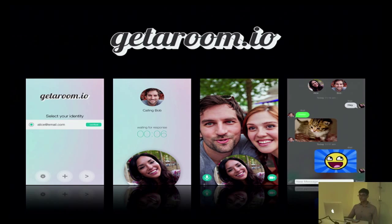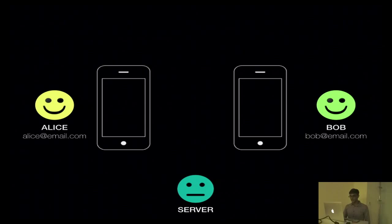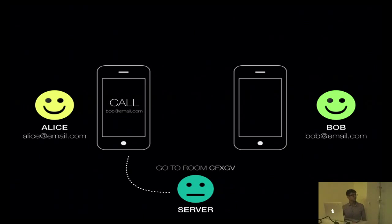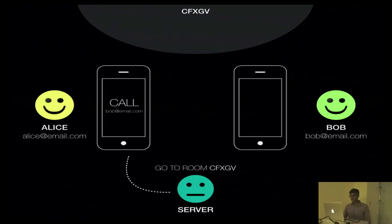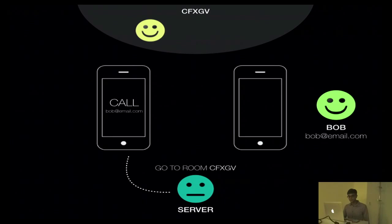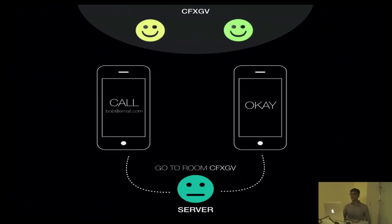Before I demo it to you, I want to go through what's going on behind the scenes. Building on the earlier example, we have Alice and Bob again. In this case, we have a server that actually handles the room name creation for us. Alice wants to make a call to Bob, the device informs the server, and then the server creates a room name — cfxgv — which identifies the room that the two peers will be joining. It then directs Alice to the room. Bob then has the option of accepting or declining, and let's say he chooses to accept. He's then directed to the room as well. Once both peers join the room successfully, a Skylink connection is formed and they can start sharing audio, video, messages, and files.